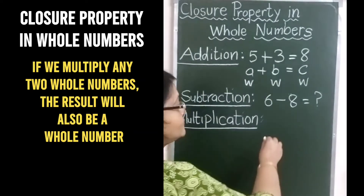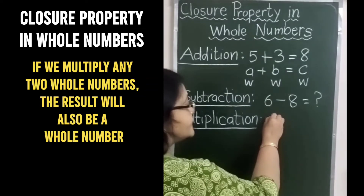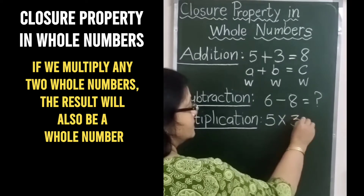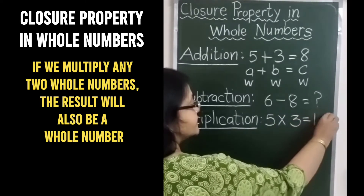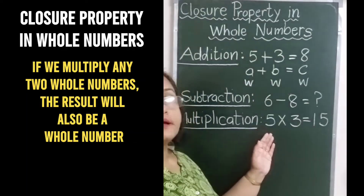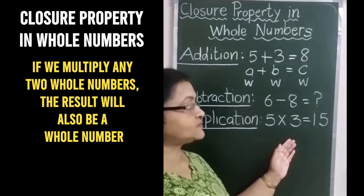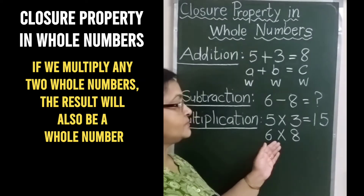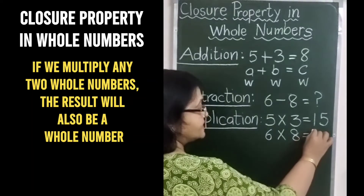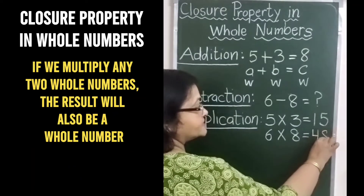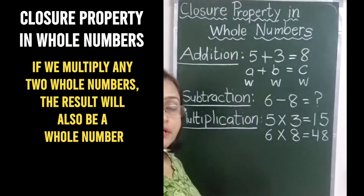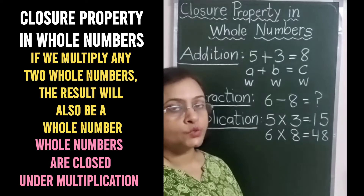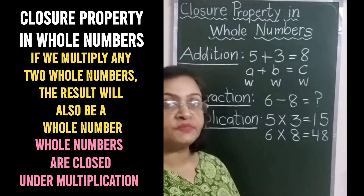But in multiplication, if we multiply any two whole numbers, we get another whole number as the result. अगर हम किन्हीं 2 whole numbers को multiply करते हैं, तो उनका product भी whole number ही होगा. Like, if we multiply 6 and 8, we will get another whole number — 48 — as the result. So we can say whole numbers are closed under multiplication also.